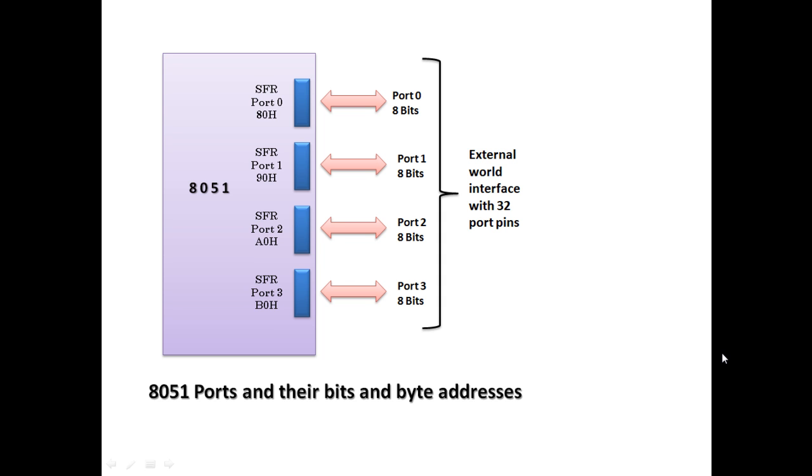Each port is associated with a register, popularly called as SFR in 8051. SFR are special function registers that manage the port activities. Port 0 is associated with register address 80H, port 1 with 90H, port 2 with A0H, and port 3 with B0H.